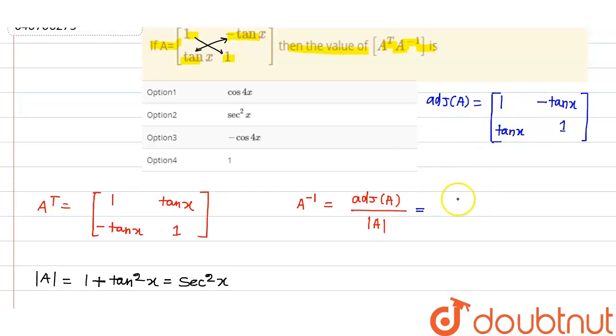So this is what I can say, this is 1 upon sec square x is equal to this is what 1 minus tan x, tan x and we have what? 1.